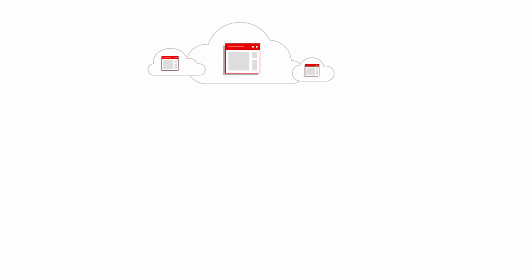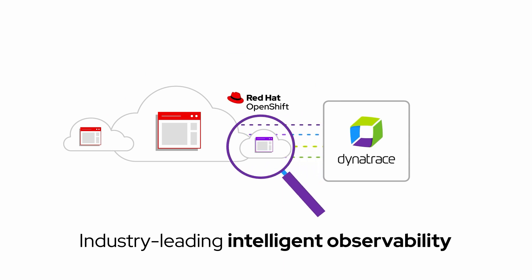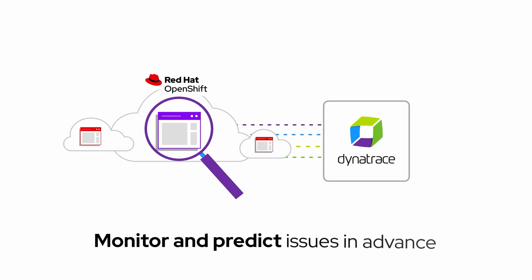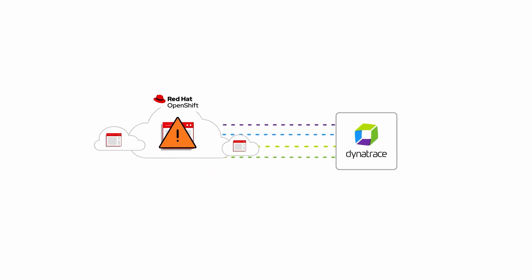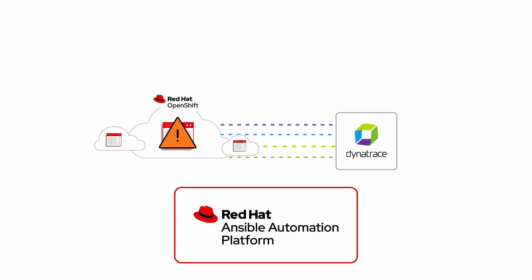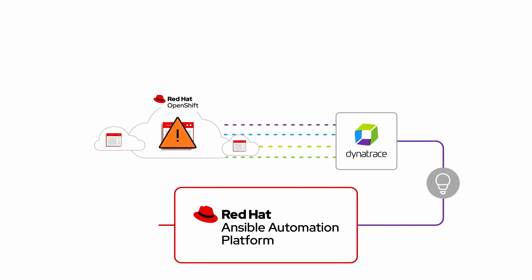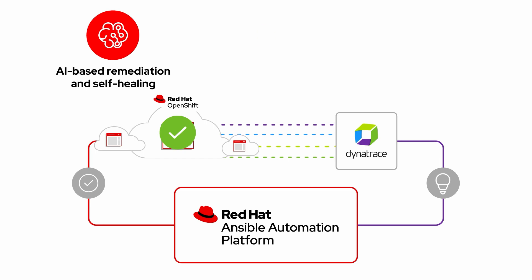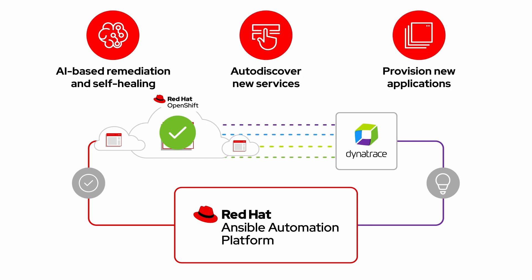Then add industry-leading intelligent observability from Dynatrace to monitor and predict issues before they impact the user experience. When combined with Red Hat Ansible Automation Platform, you can use insights from Dynatrace for AI-based remediation and self-healing, as well as auto-discover new services, provision new applications, and more.